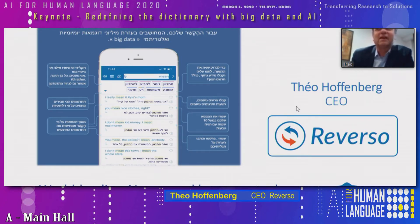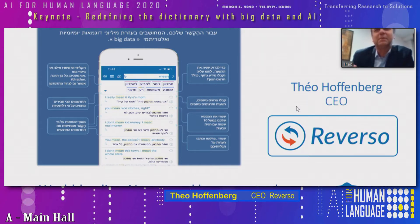Reverso is a series of language tools used by 60 million people, with a mobile app used by 20 million people with a good rating, and we are number one in similar web in our category.